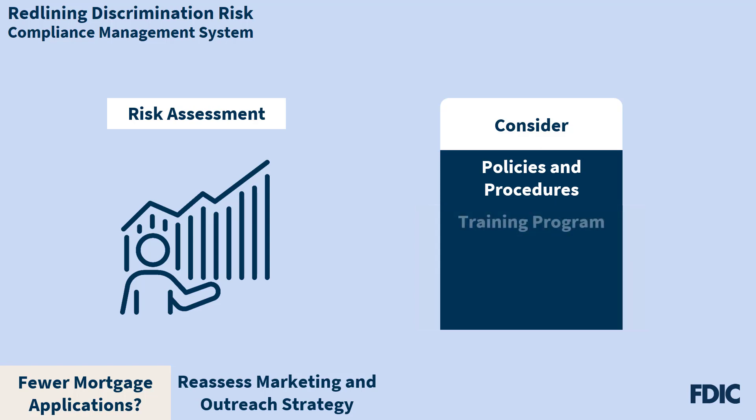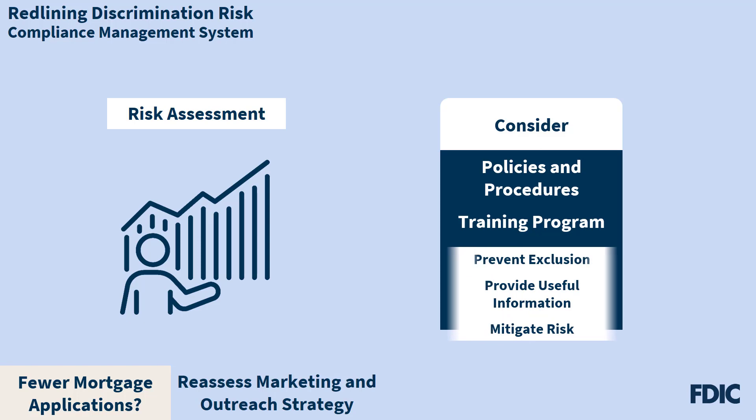Ongoing training is also a key element to an effective CMS. Training that discusses redlining, how it can occur, and methods to prevent excluding majority-minority areas provides useful information to bank personnel that may help them identify and think of ways to mitigate specific redlining risk they might not have considered.